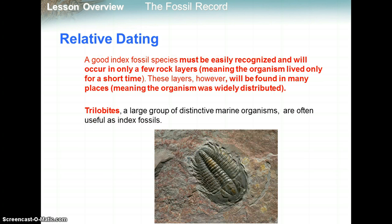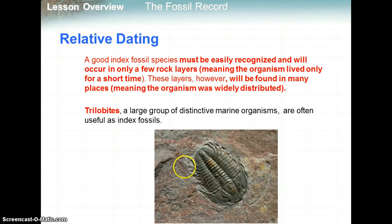A good index fossil is a species that must be easily recognized and will only occur in a few rock layers, meaning the organism lived only for a short period of time. These layers will be found in many places, meaning the organism was very widely distributed. This is a trilobite. A trilobite is a common index fossil — it's a large group of distinctive marine organisms and are often used as index fossils.